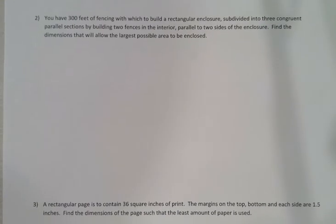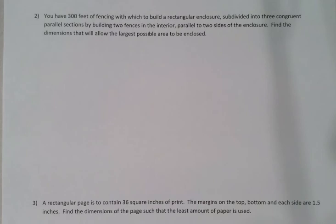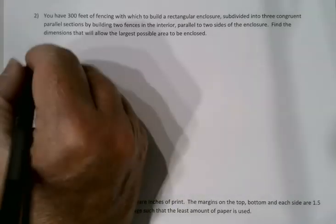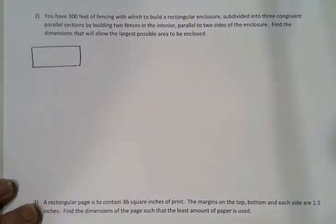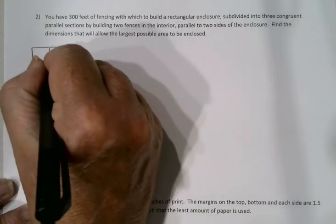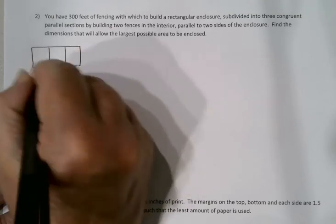Let's look at another fencing problem. In example 2, you have 300 feet of fencing this time, and you want to build a rectangular enclosure and subdivide it into three congruent parallel sections by building two fences in the interior parallel to two sides of the enclosure. Find the dimensions that will allow the largest possible area again. So once again I'm going to start with a picture. I want a rectangular enclosure, and I'm going to subdivide that into three congruent parallel sections by building two interior fences.